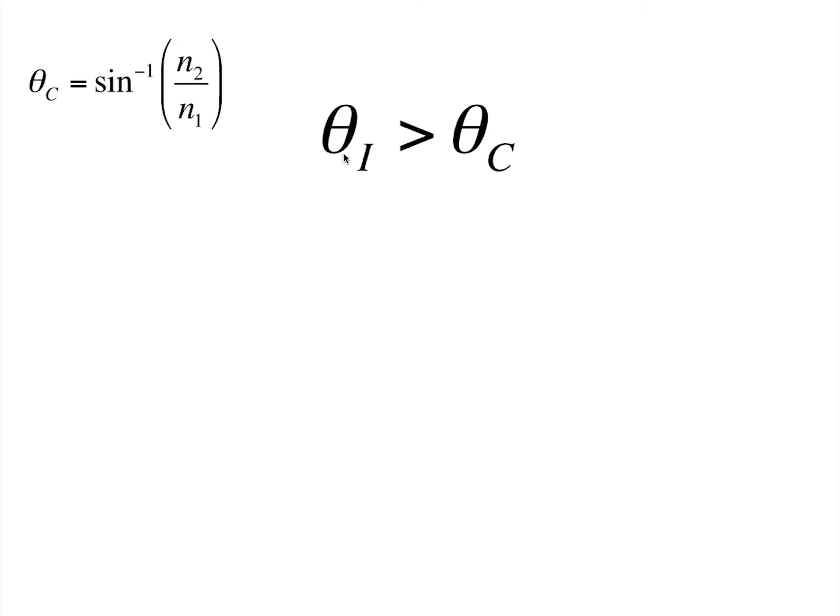Now, taking these two expressions and substituting the value of theta i from the previous relation, we get sine inverse of n2 by n1 sine theta t is greater than theta c. Now, putting this expression inside this,